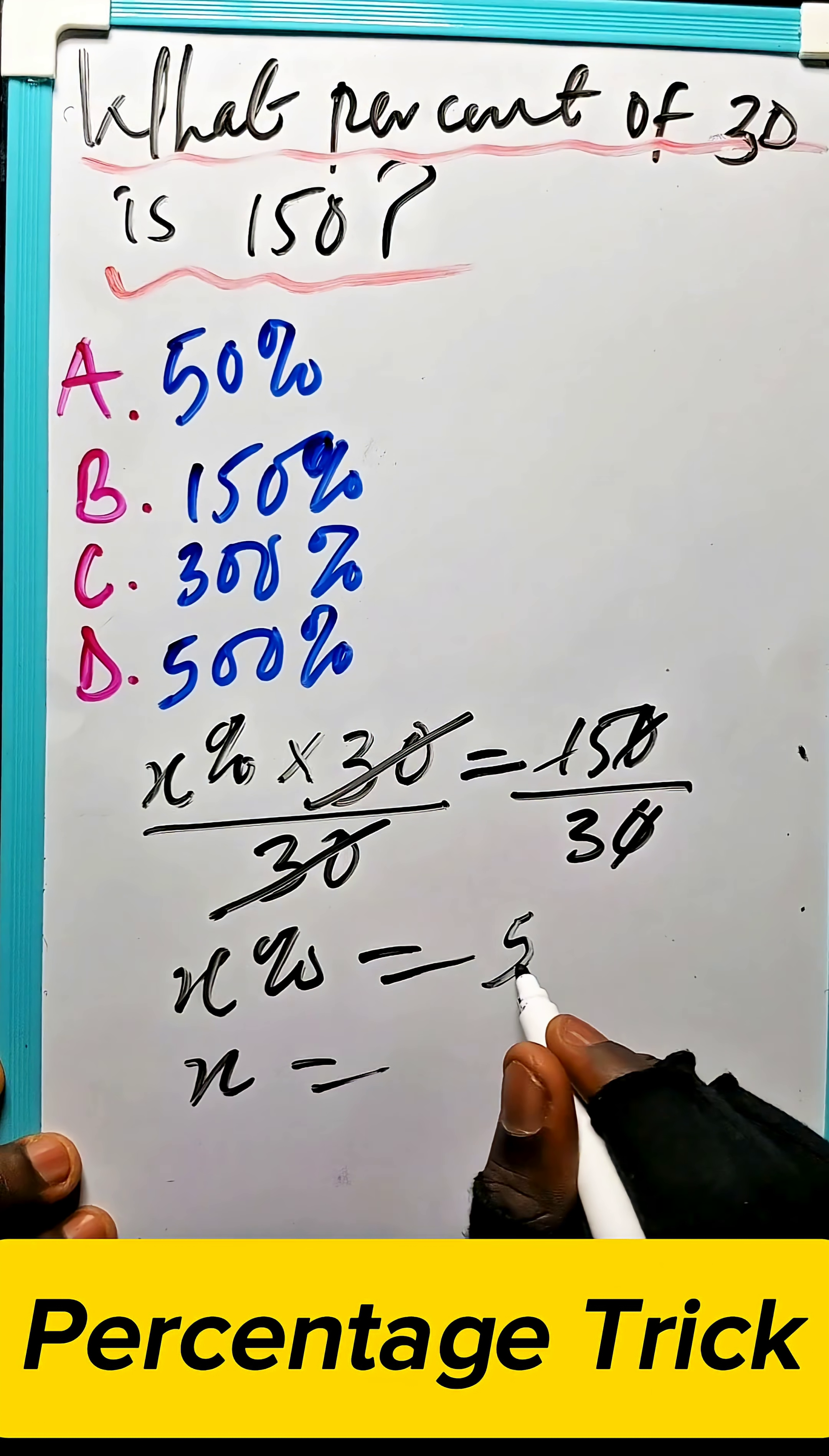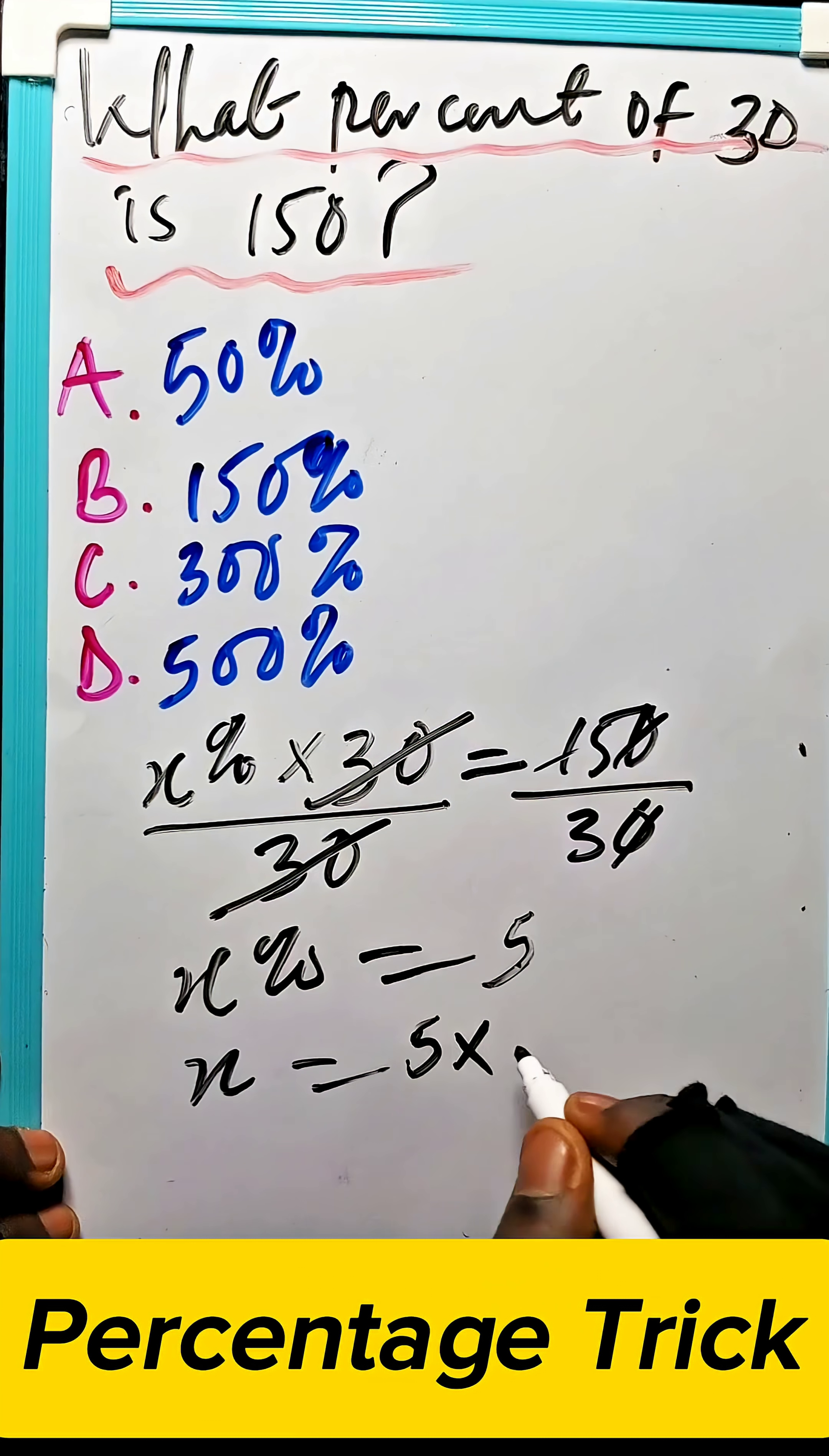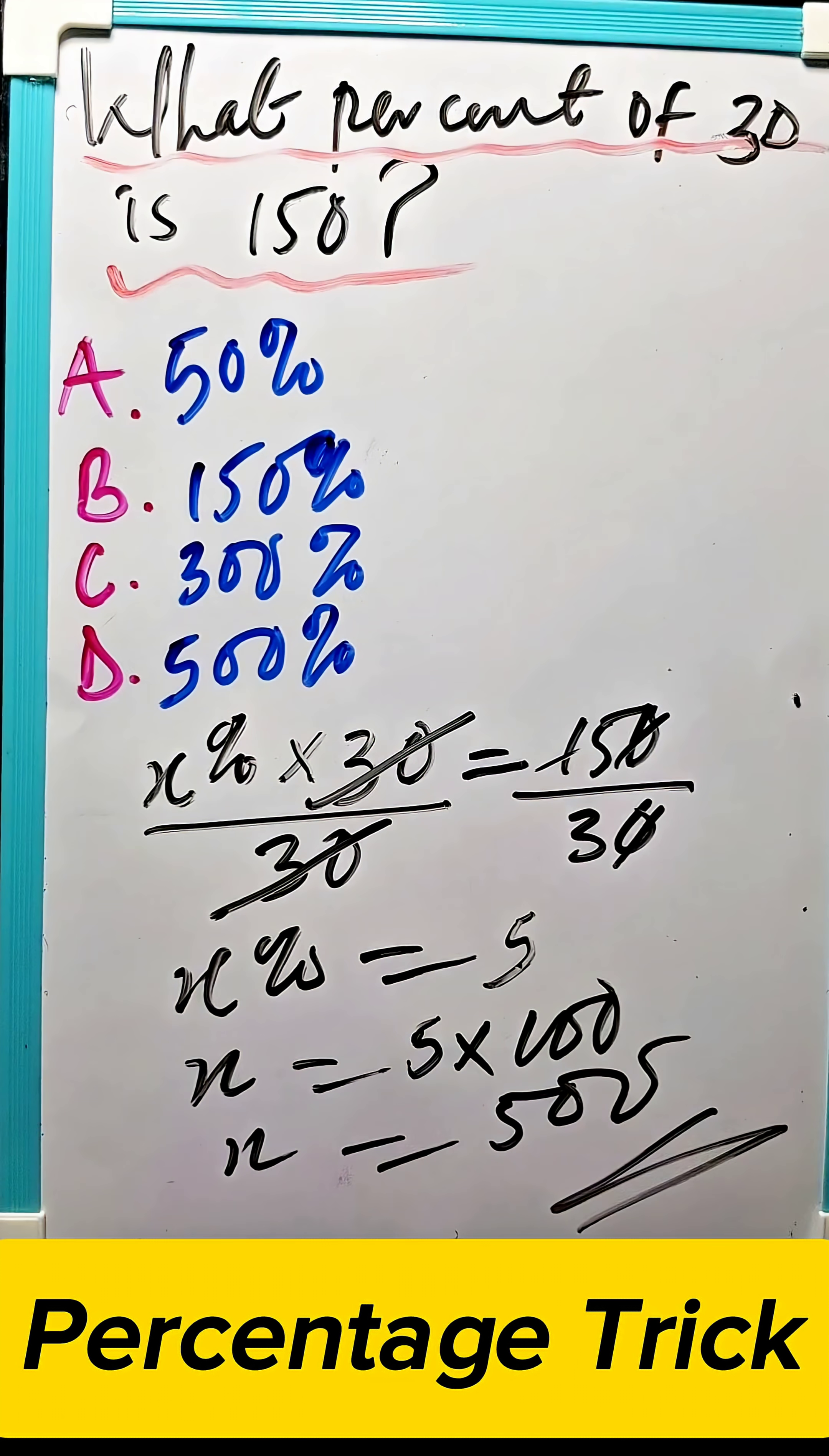That is 100. 5 multiplied by 100, x is equal to 500 percent. That's it.